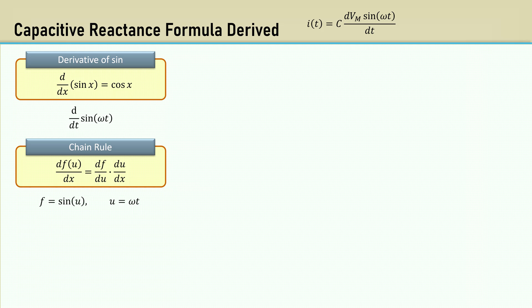Recall from calculus the chain rule. It's a formula that expresses the derivative of the composition of two differentiable functions. F will be the sine of U, where U is omega T. We take the derivative of the sine of U and multiply it by the derivative of omega T.